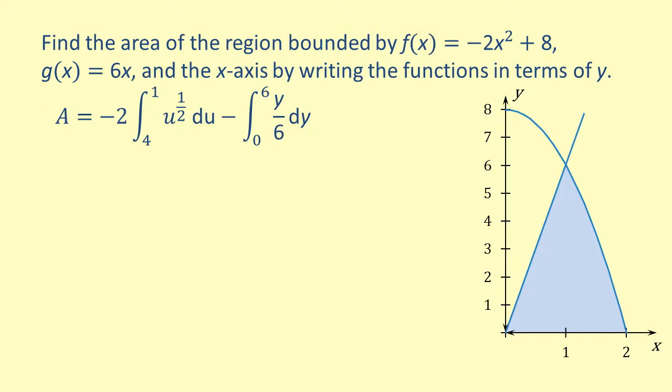Notice that the limits of integration in the first integral go from larger to smaller. So let's reverse the limits by taking the negative of the integral. Now let's integrate. We get 2 times (2u^(3/2) over 3) evaluated from 1 to 4, minus y squared over 12 evaluated from 0 to 6.